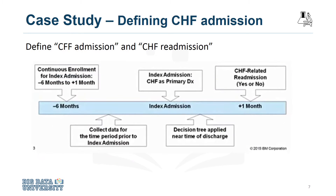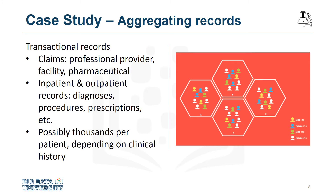Next, the records that were in transactional format were aggregated, meaning that the data included multiple records for each patient. Transactional records included professional provider facility claims submitted for physician, laboratory, hospital, and clinical services. Also included were records describing all the diagnoses, procedures, prescriptions, and other information about inpatients and outpatients. A given patient could easily have hundreds or even thousands of these records depending on their clinical history.